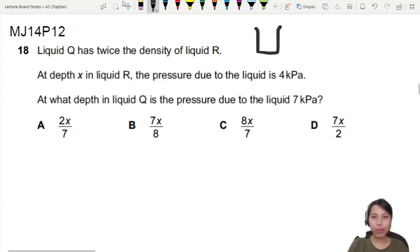So I'm going to draw my two containers. I got liquid Q and liquid R. And the hint lies here, twice the density. So Q is 2 times of R.